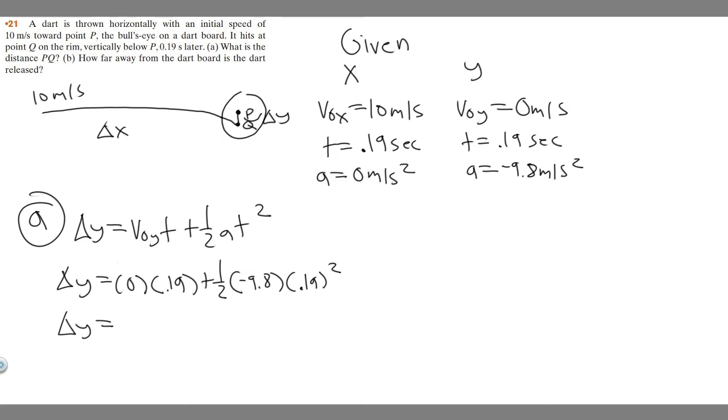Essentially ΔY is going to equal just this part, because 0 times this becomes 0. So it's just ½ times minus 9.8 times 0.19 squared. If you plug that in your calculator, you're going to get minus, keep it minus, because we have a negative sign there, minus 0.176 meters.